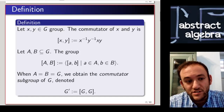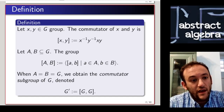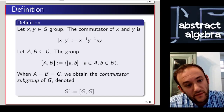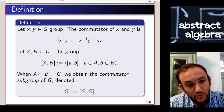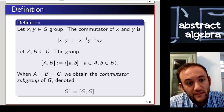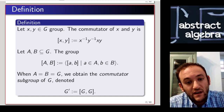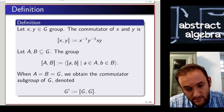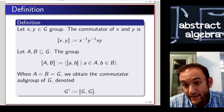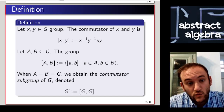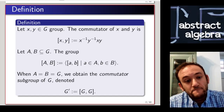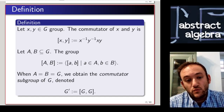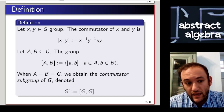We'll start with some definitions. Let's take x and y to be elements of g, a group. Then we say that the commutator of x and y is denoted in brackets: [x, y] is defined as x inverse y inverse x y.